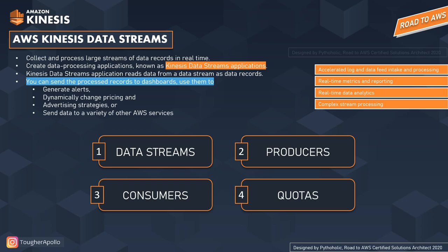Using KDS, we can collect and process large streams of data records in real time and create data processing applications, also known as Kinesis Data Streams applications. The Kinesis Data Streams application reads data from a data stream — a data record — and we can send these processed records to dashboards, generate alerts, dynamically change prices, use them for advertising strategies, or send data to a variety of other AWS services.